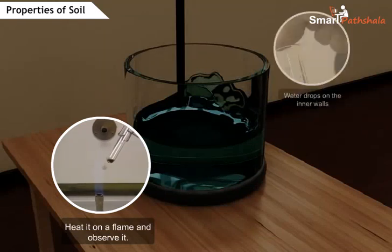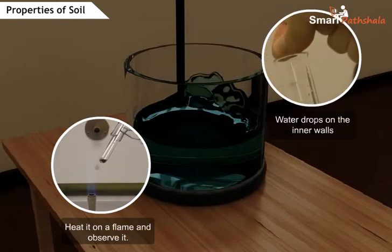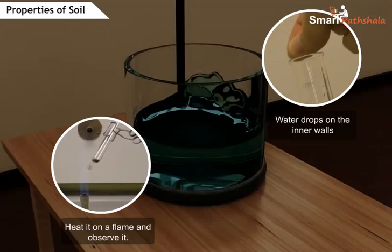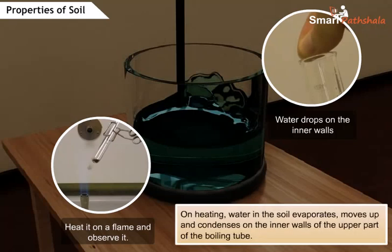We can find water drops on the inner walls of the upper side of the tube. The reason behind this is, on heating, water in the soil evaporates, moves up and condenses on the inner walls of the upper part of the boiling tube.